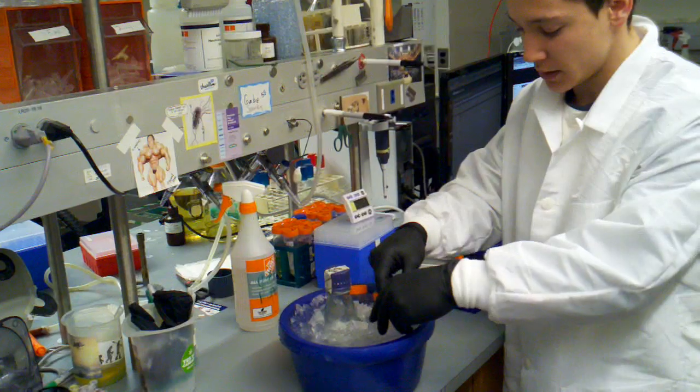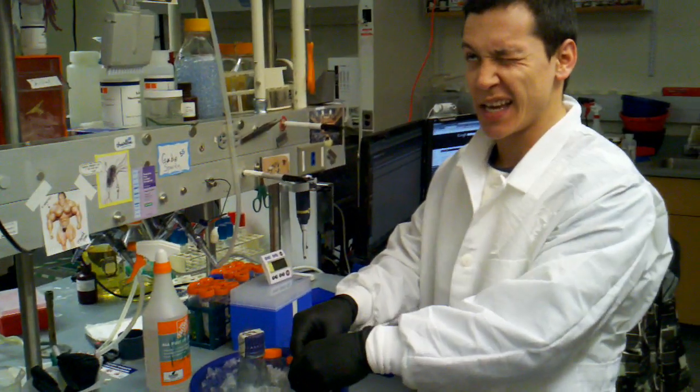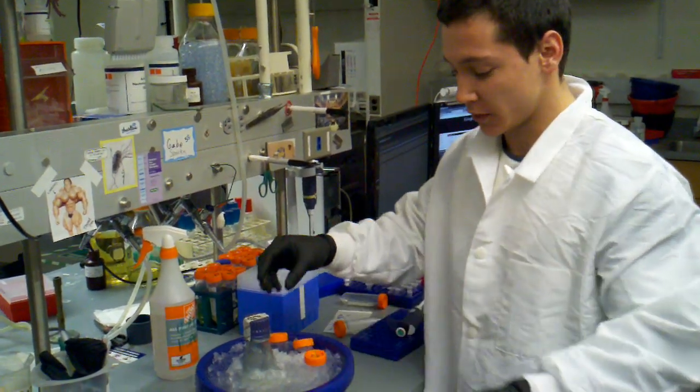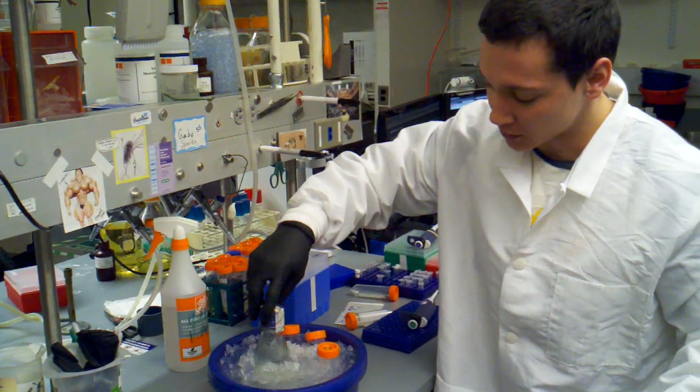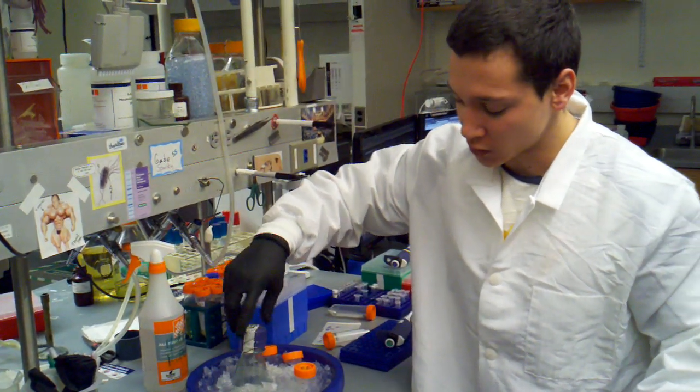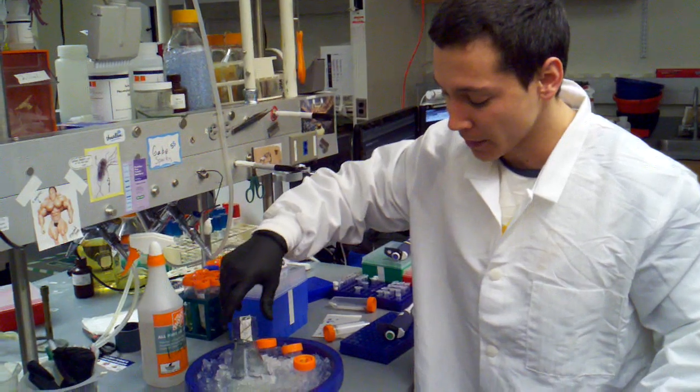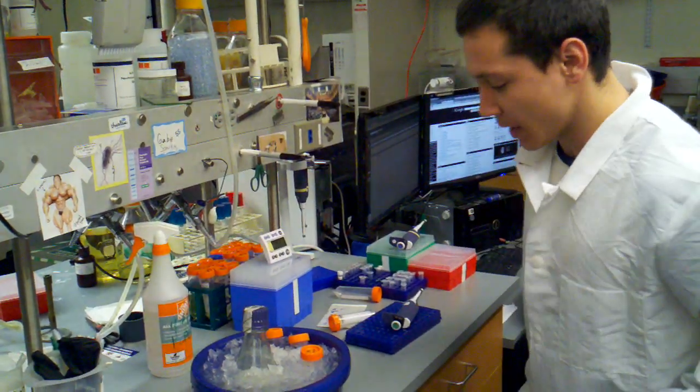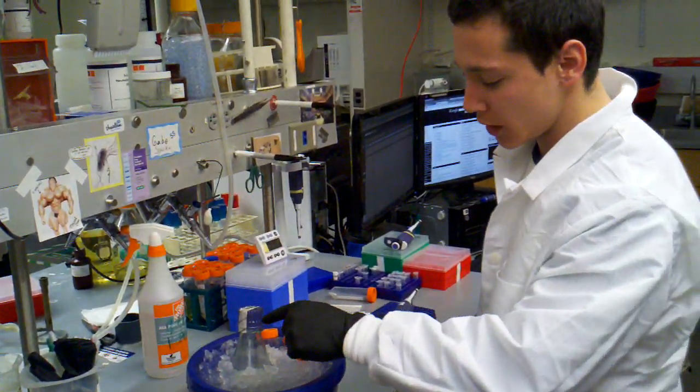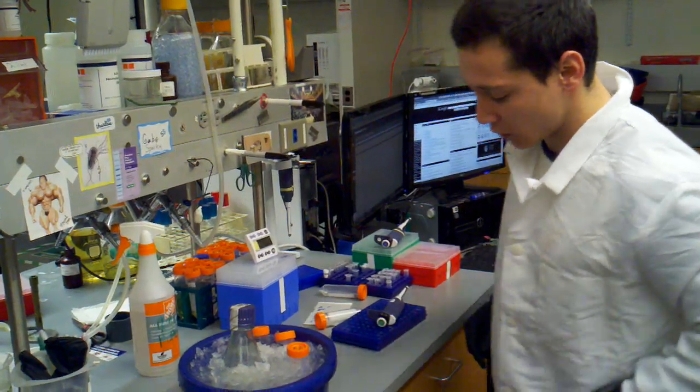And we're going to be using the TA10 rotor for this centrifuge. So this is probably cold enough. I just slosh it around a little bit more. Make sure it's really cold. That's the most important part at this point. And now we're going to transfer the culture from our flask into our conical vial.